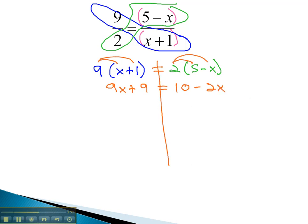To keep solving, we need to get the variable all on one side before we start moving any numbers. And to do that, we'll get rid of the negative 2x by adding 2x to both sides, because negative 2x is the smaller one. This gives us 11x plus 9 equals 10.